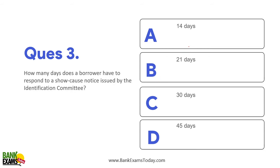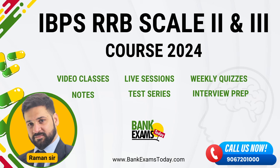How many days does a borrower have to respond to the show cause notice issued by the identification committee? The borrower has 21 days to reply to the notice, otherwise he would be labeled as a willful and large defaulter.